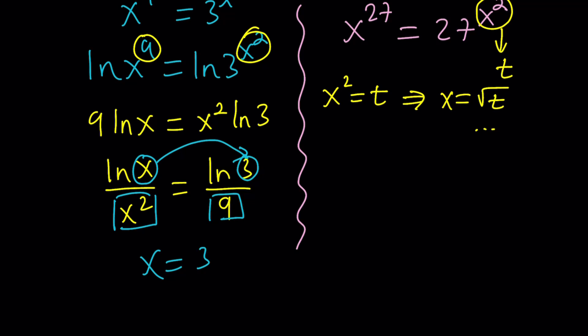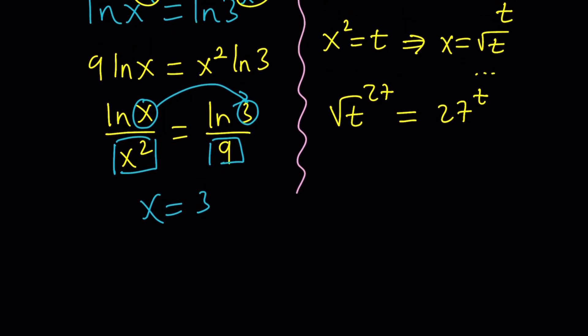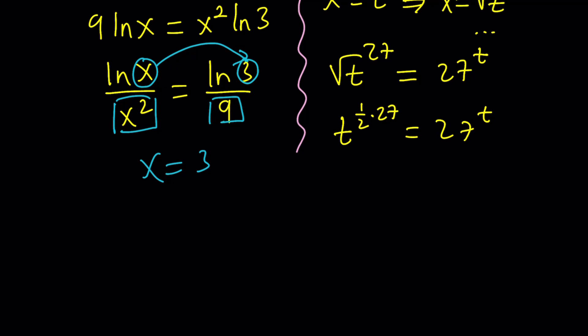Let's plug it in. x will be replaced with square root of t, raised to the power of 27, and this will be 27 to the t. We were trying to get rid of the square, but now we have a radical, which is fine because we can get rid of that. We can write the square root of t as t to the power of 1/2, and then multiply by 27 because those are two exponents. We can write it this way: t to the power of 27 over 2 equals 27 to the power of t.